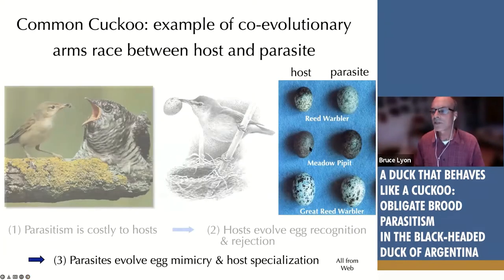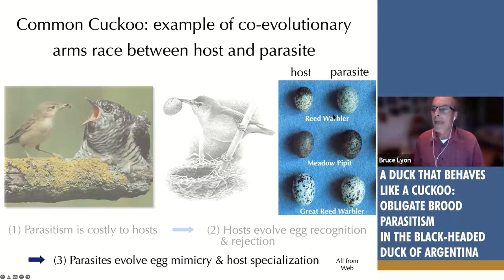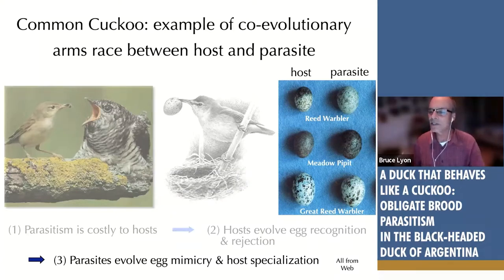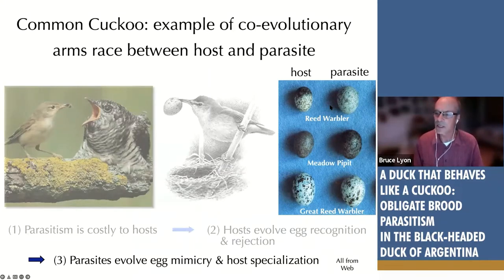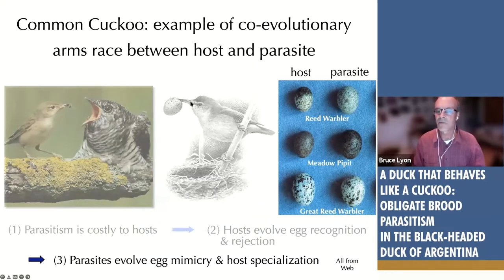Over evolutionary time, egg rejection by hosts created selection pressure for the cuckoo to match host eggs and evade recognition. So we see the evolution of egg mimicry — each lineage of cuckoo matches a different host species. But once you evolve mimicry for a reed warbler egg, you're kind of tied to using that host species. This is co-evolution: the arms race between host and parasite leads to egg rejection by hosts and egg mimicry by parasites.